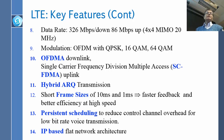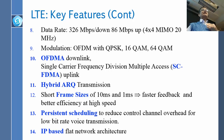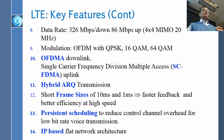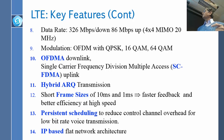OFDMA — they use OFDMA only in the downlink, not in the uplink. The main difference between LTE and WiMAX is that WiMAX used OFDMA in both. We will see when we come to SC-FDMA — I will explain what SC-FDMA is and why they chose that. Other than that, LTE is mostly similar to WiMAX.